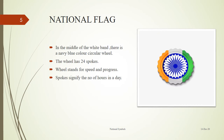In the middle of the white band there is a navy blue color circular wheel. The wheel has 24 spokes. The wheel stands for speed and progress. The spokes signify the number of hours in a day. The design of the national flag was adopted by the Constituent Assembly of India on 22nd July 1947. It is the symbol of our freedom, which has inspired the Indian people during the struggle for freedom. It is hoisted on all important government buildings in India and all our embassies in other countries.